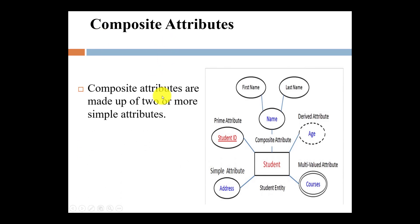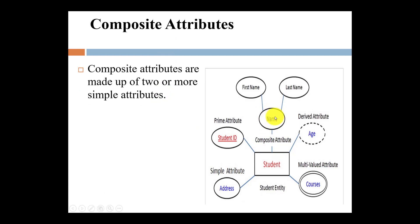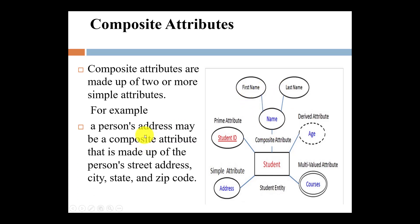Now what is a composite attribute? Composite attributes are made up of two or more simple attributes — they can be further divided. For example, student name can be further divided into first name, middle name, and last name. In a form, you fill in each value separately. This is represented by oval to oval in an ER diagram. Another example is a person's address, which can be further divided into street address, city, state, and zip code. This is the composite attribute — it can be divided into two or more simple attributes.